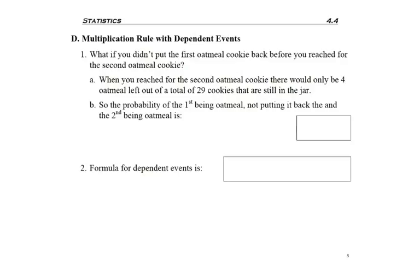So now let's look at the multiplication rule with dependent events. A few minutes ago, we did a problem where you picked one oatmeal cookie and then put it back and reached for a second cookie to see if it was oatmeal. That first oatmeal cookie, there were originally five oatmeal in a jar of 30. And since the second one was done with replacement, we just multiplied 5 over 30 squared to get our answer.